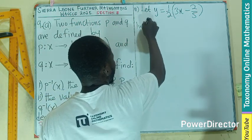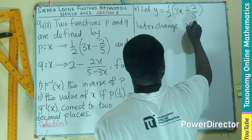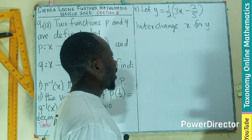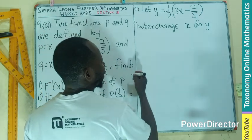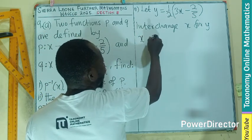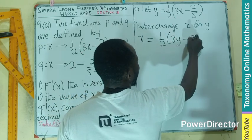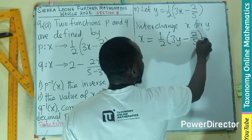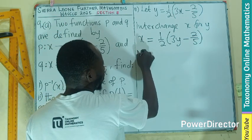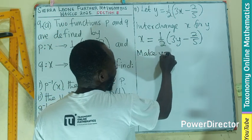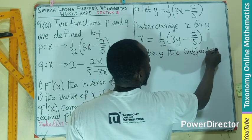So we have interchanged X for Y. Meaning where I see Y, I write X equals to one-half times three Y minus two-fifths. So now the next thing is to make your Y the subject. Make Y the subject.